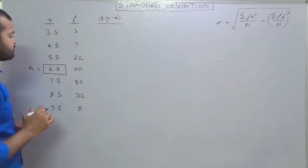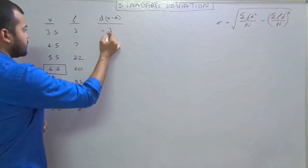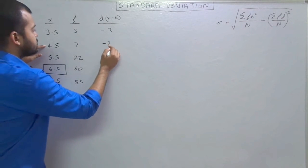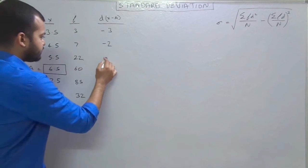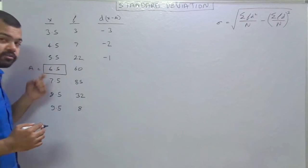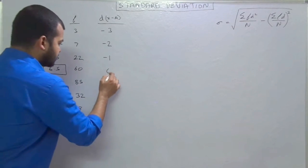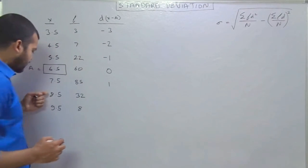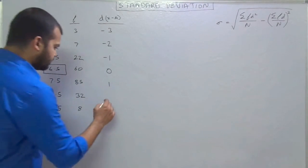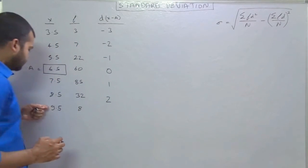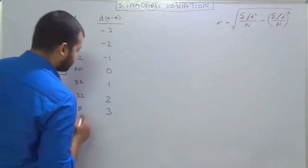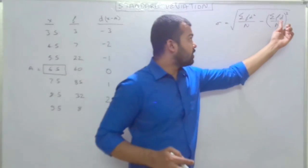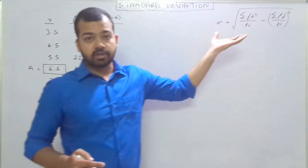So calculating d = x minus A: 3.5 minus 6.5 is −3, 4.5 minus 6.5 is −2, 5.5 minus 6.5 is −1, 6.5 minus 6.5 is 0, 7.5 minus 6.5 is 1, 8.5 minus 6.5 is 2, 9.5 minus 6.5 is 3. Now we need the fd column as the next demand of the formula.